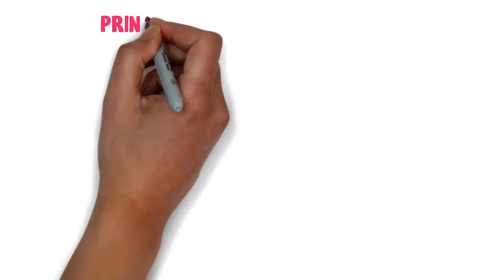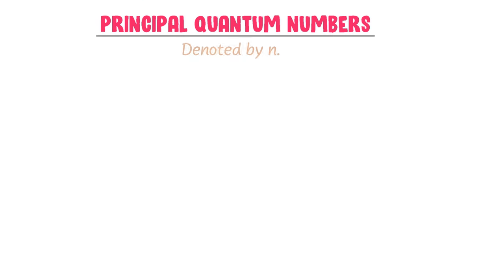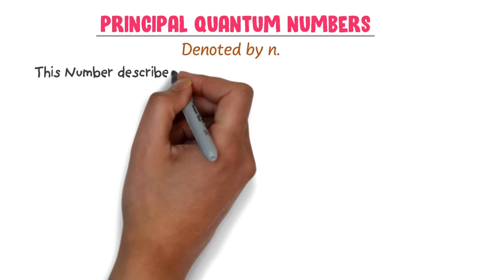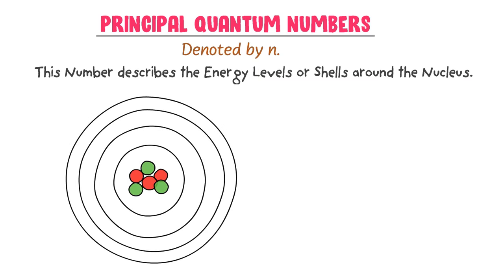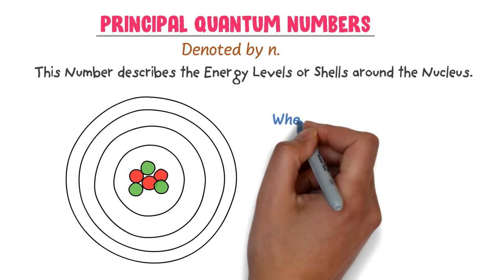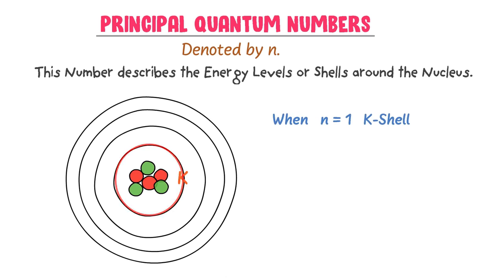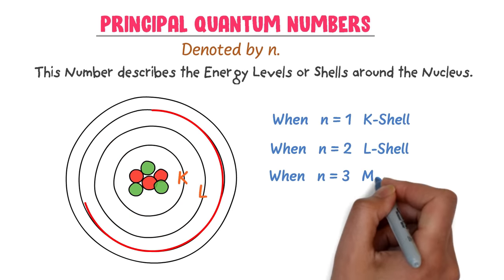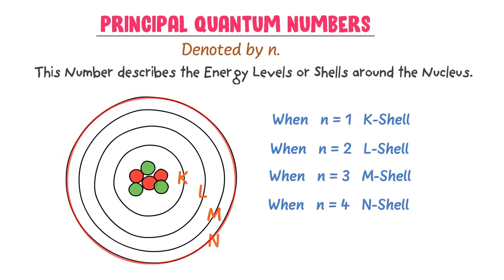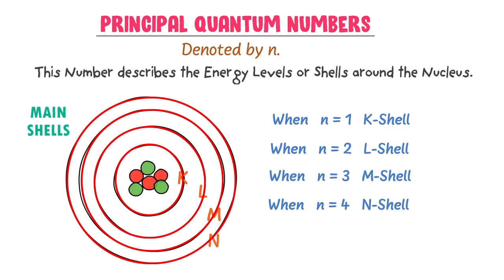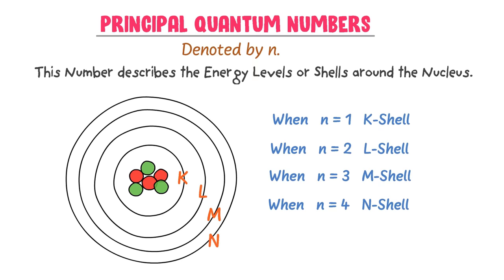The first quantum number is principal quantum number and it is denoted by small n. This number describes the energy levels or shells around the nucleus where electrons revolve. For example when n is equal to one it is K shell, when n is equal to two it is L shell, when n is equal to three it is M shell, and when n is equal to four it is N shell. I call these shells or energy levels as main shells or main energy levels. Thus remember that n starts from one and goes up to four.